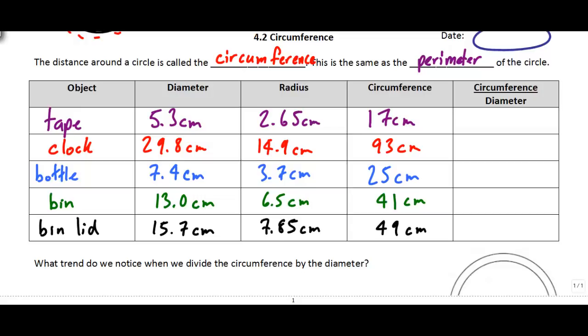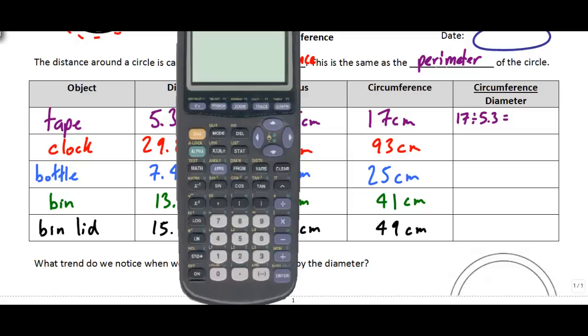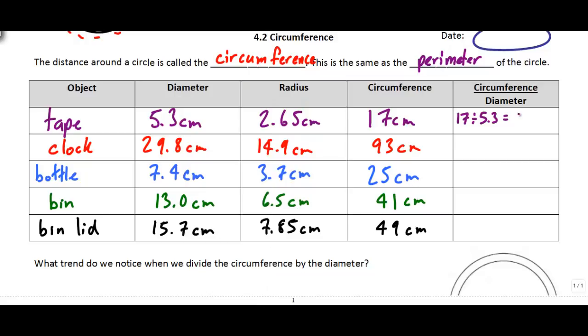So I'm just going to take a second here to calculate the circumference divided by the diameter in each case. So for this first one I measured some tape, so the example would be 17 divided by 5.3 and let's see what we get. Okay, I get, you notice this number goes on for quite some digits, so I'm going to round this off to just the second digit right about there. So I'm going to call this 3.21. Okay, I'm just going to do the same thing for each of these here.